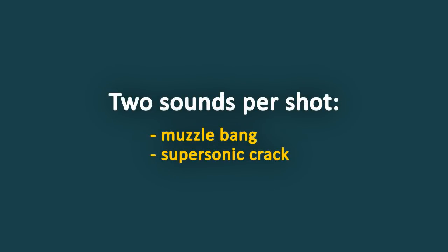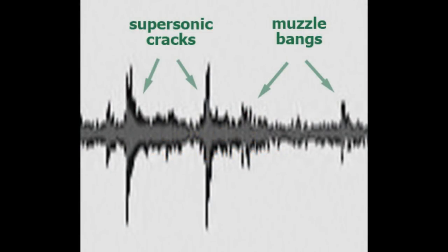The main point that we need to stress is that for high-powered firearms, there are two independent sounds per shot. One is the muzzle bang, the other is the supersonic crack. They originate in the same place and time, but after that, they exist independently.